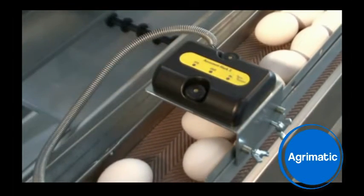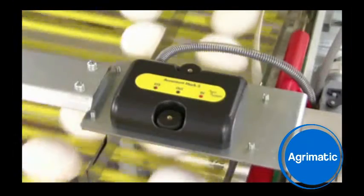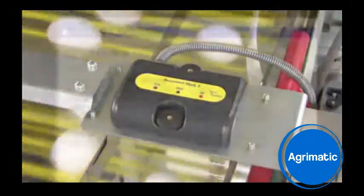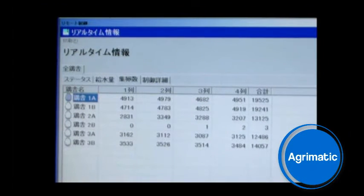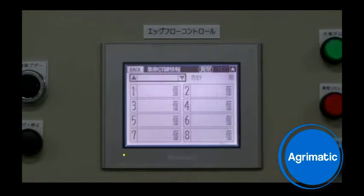AccuCount can be installed on egg cross conveyors for counting eggs coming out from half a row of the egg collector. Another installation is on the egg cage counter for counting eggs coming from each cage line. AccuCount outputs counting signals by 300-millisecond pulses which can be displayed on a PC screen or display panel.